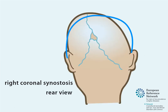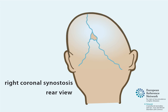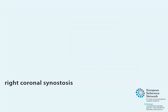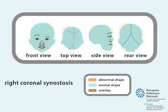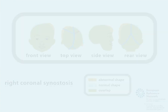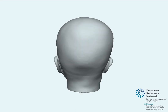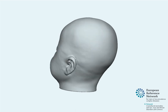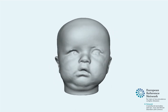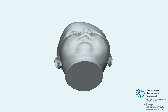From the back, a little asymmetry is noticed. In conclusion, coronal synostosis is characterized by an asymmetrical facial appearance and flattening of the forehead with compensatory bossing on the contralateral side. This is called anterior plagiocephaly, as seen in the 3D image in the video.